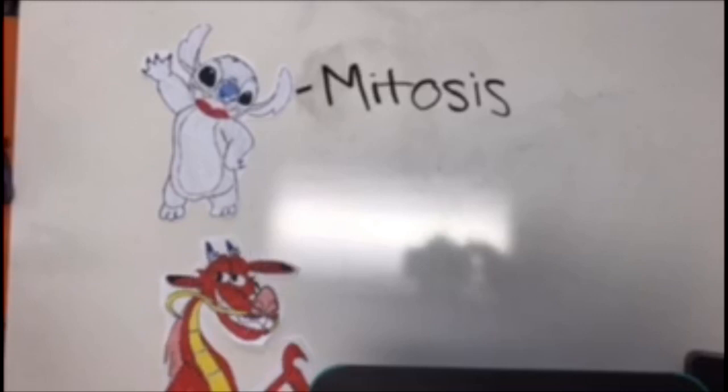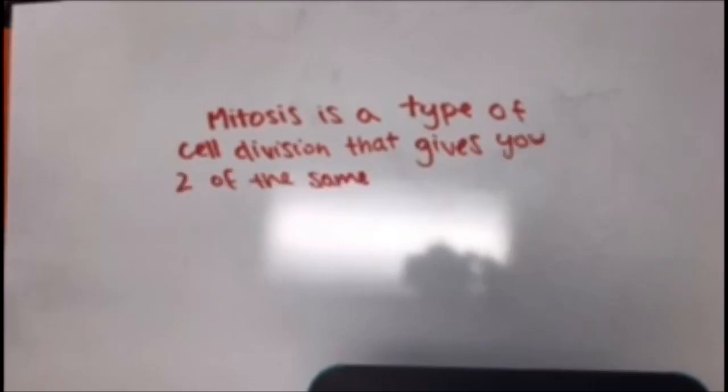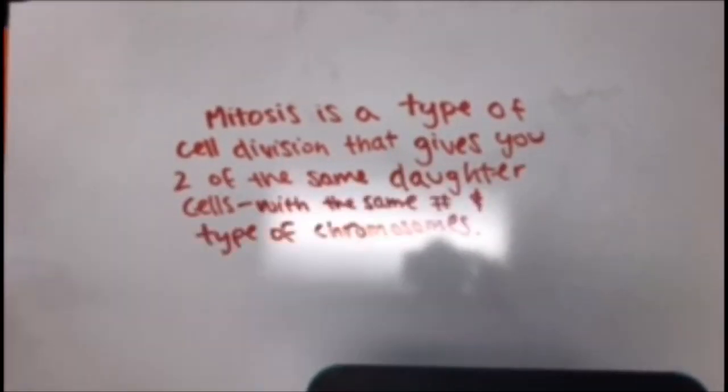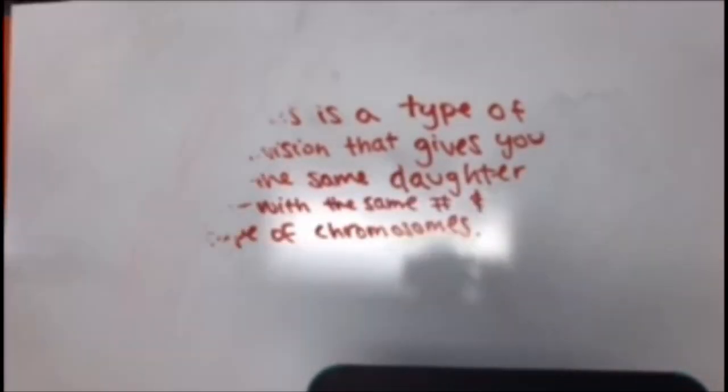Wait, slow down there, Stitch. What even is mitosis? Well, Mushu, to be quite bland, mitosis is a type of cell division that gives you two of the same daughter cells, and they have the exact same number and kind of chromosomes. Oh, my baby, off to destroy people. Mushu, they're not destroying, they're splitting. Anyway, it's not as simple as that might sound.